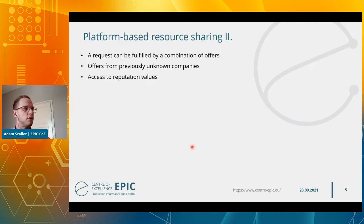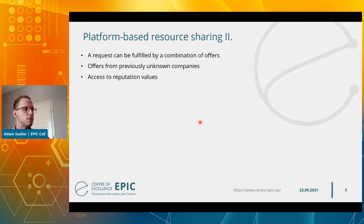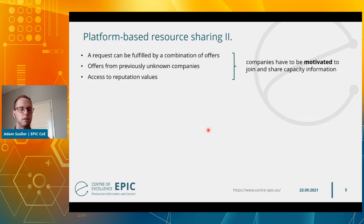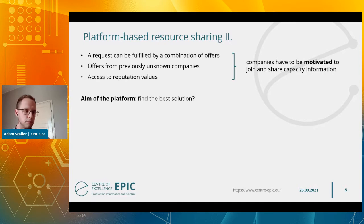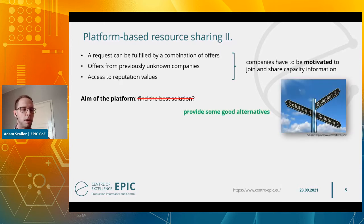In the platform-based resource sharing model, a request can be fulfilled by a combination of offers coming from possibly different companies. The platform can also send offers from previously unknown companies, and it gives access to reputation values, which will be introduced in detail shortly. These are the three main motivations for companies to join and share capacity information within the federation. The aim of the platform is not to find the single best solution, but to provide good alternatives for the requesting companies.